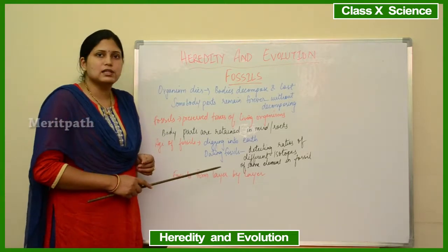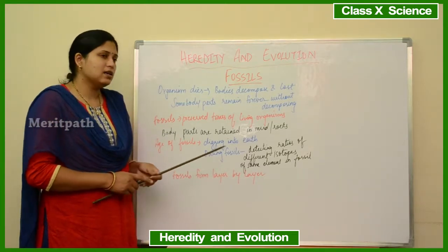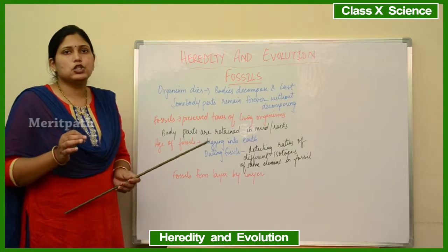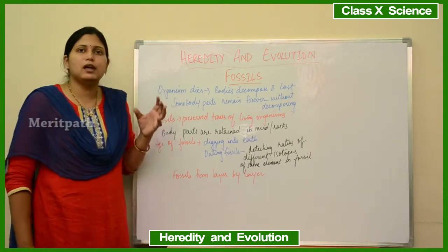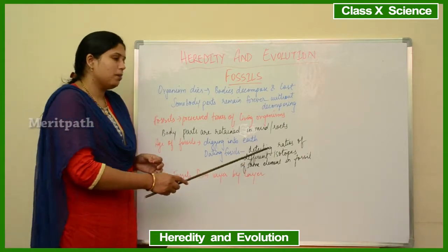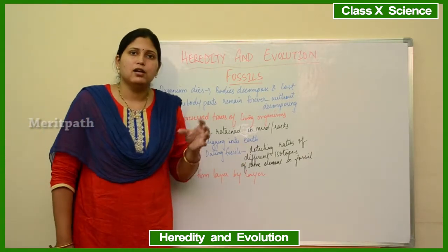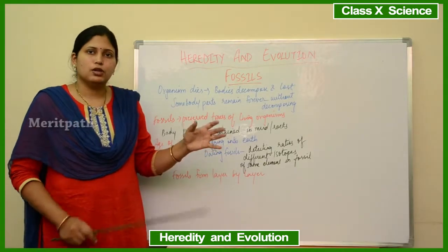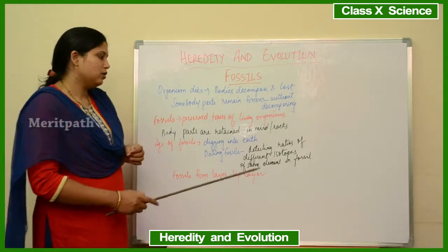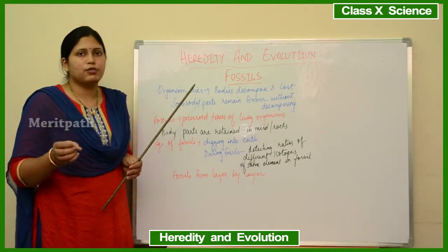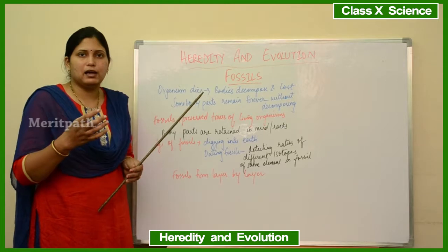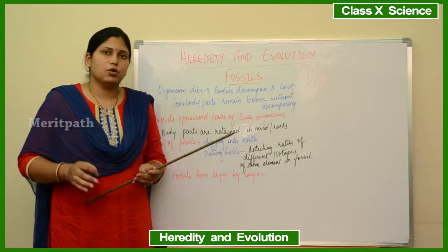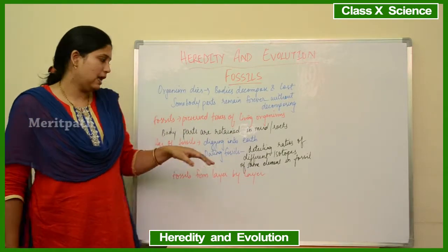The next method for determining the age of a fossil is dating — detecting the ratios of different isotopes of the same element. An isotope means that within an element, the proton number remains the same but the neutron number is different. Chemical elements are extracted from the fossil, and then the protons and neutrons are counted and their ratio is measured. This ratio of isotopes also determines the age of the fossil.